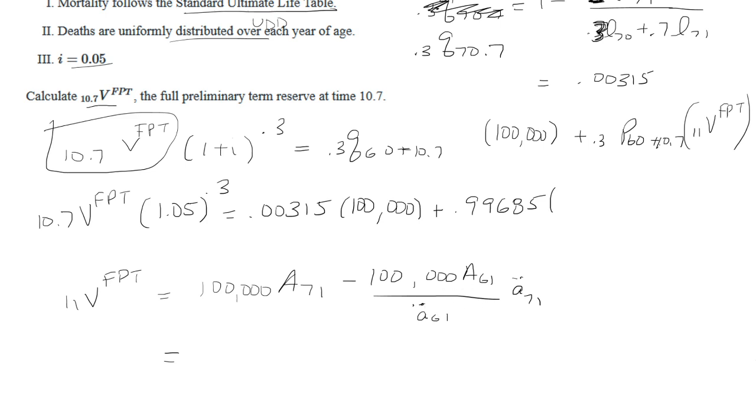Again, you just get the information from the Standard Ultimate Life Table, plug everything in, and you end up getting $20,265.07. So that's going to go up here.